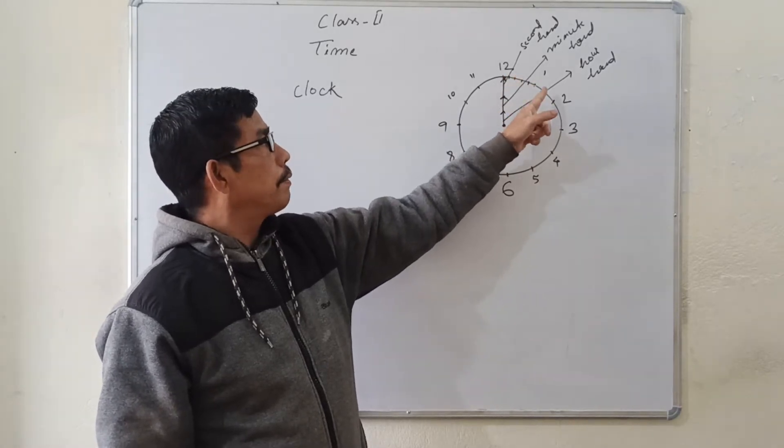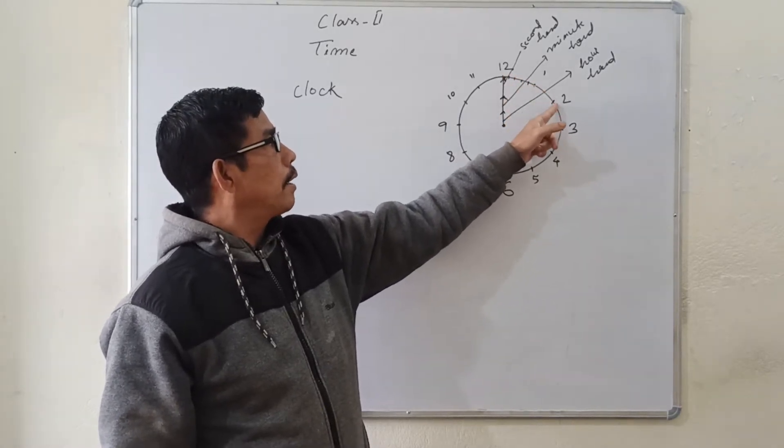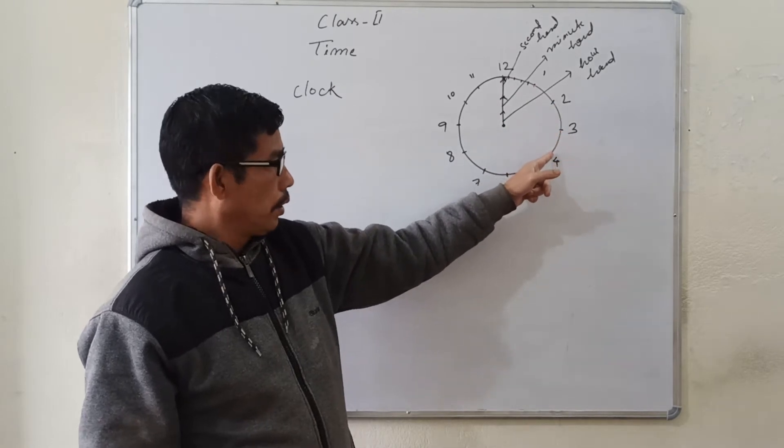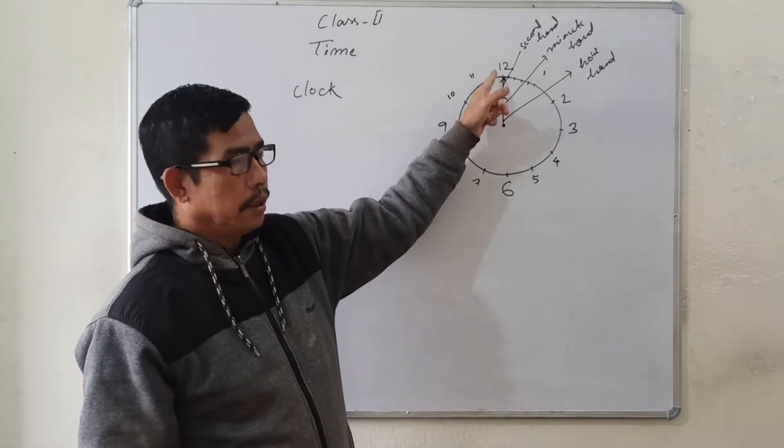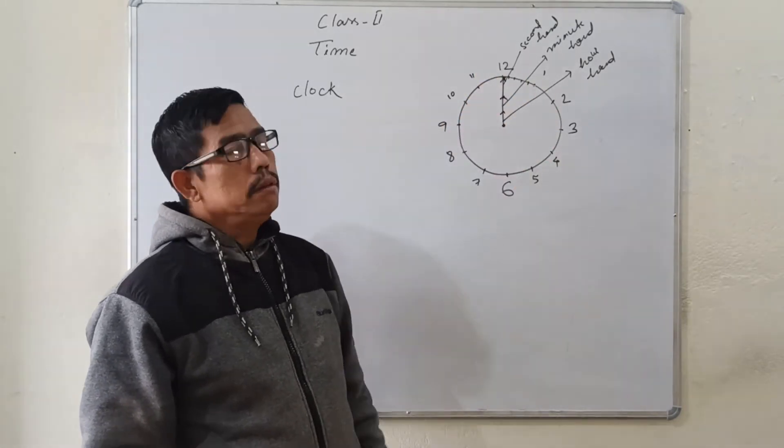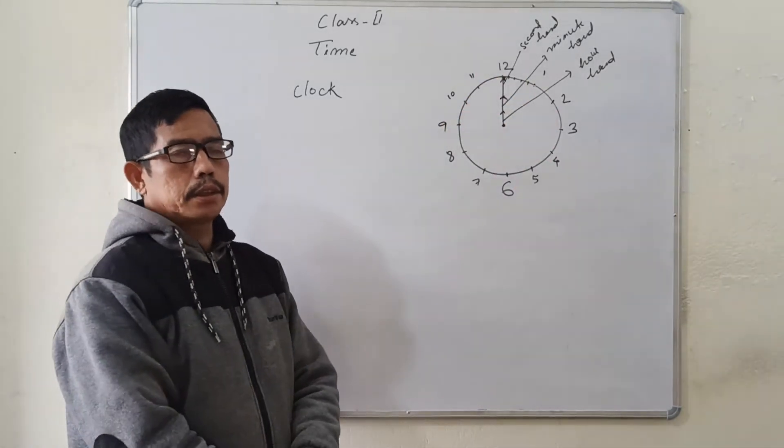That is, together, 5, 10, 15, 20, 25, 30, 35, 40, 45, 50, 55, 60. That is, there are 60 small divisions in the clock.